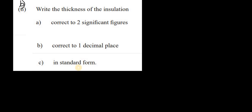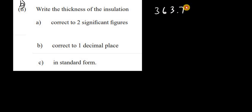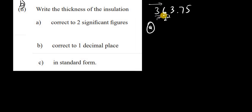Next, write the thickness of the insulation correct to two significant figures. Our number is 363.75. The first significant figure is the first non-zero digit from the left, which is 3. The second significant figure is 6. Place value is very important — the 6 here represents 60, hence 360.